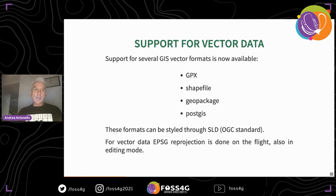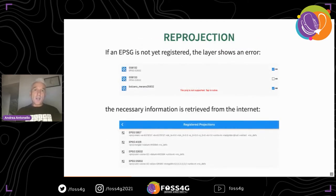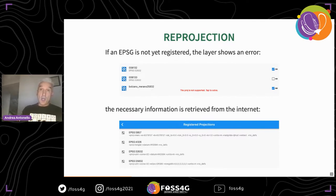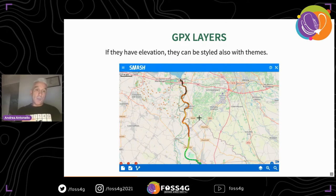The data concept changed. If you remember, in Geo Paparazzi, GPX files were imported inside the database. Now GPX files, shapefiles, GeoPackage, and PostGIS are all vector layers you can load in a GIS mode, and all these layers can be styled through SLD — a good OGC standard — and can also be reprojected. When you drag in a new layer, if the projection isn't supported yet it will give you an error; you tap it and it connects to the internet to retrieve the projection information, so you can then work with it also in editing mode with on-the-fly reprojection.